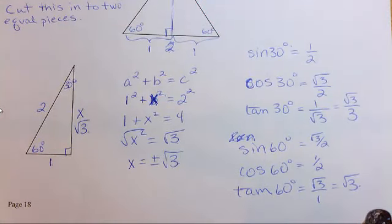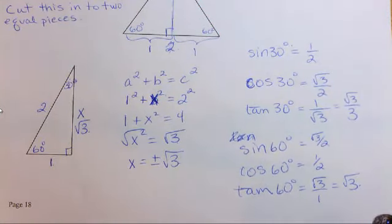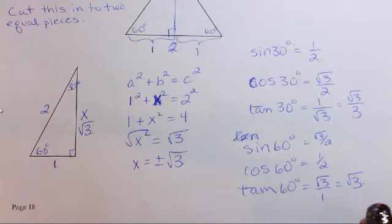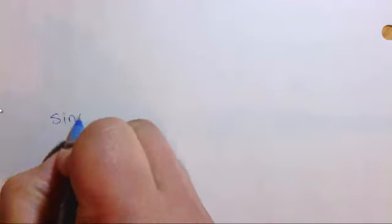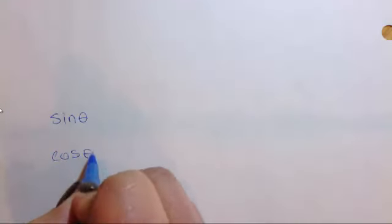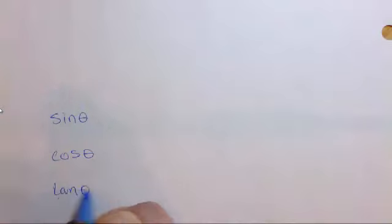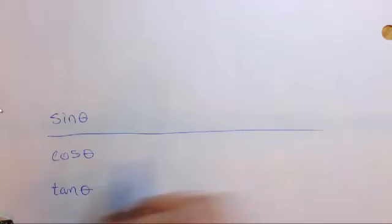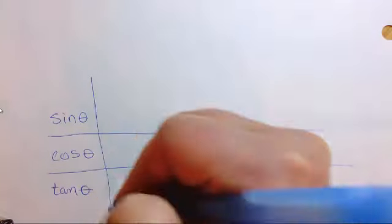And then we're going to apply that information to the unit circle. All right, so we know that we've got sine theta, cos theta, and tan theta. Okay, so I'm going to just draw lines across going like that.